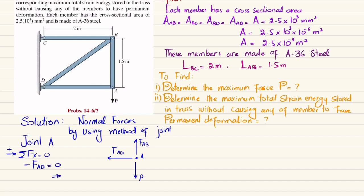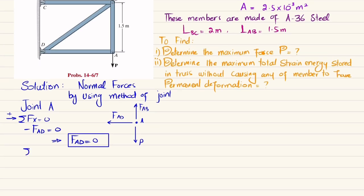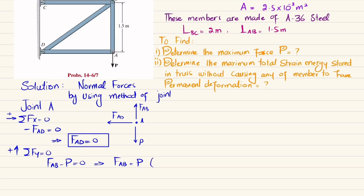The force in member AD equals zero. Applying the second equation of equilibrium — sum of forces in the y-direction equals zero, with upward positive — we get F_AB minus P = 0, so F_AB = P. Since this member pulls point A upward, the force in member AB is tensile.